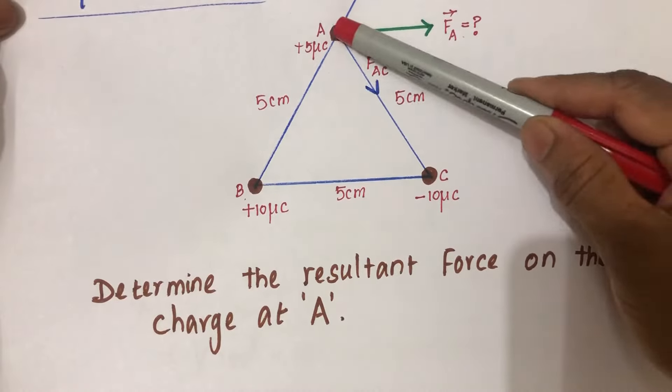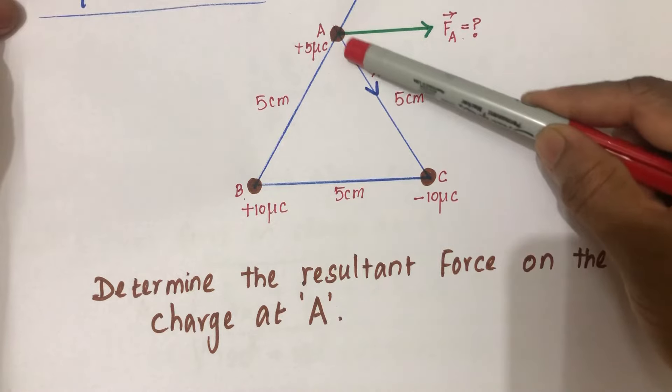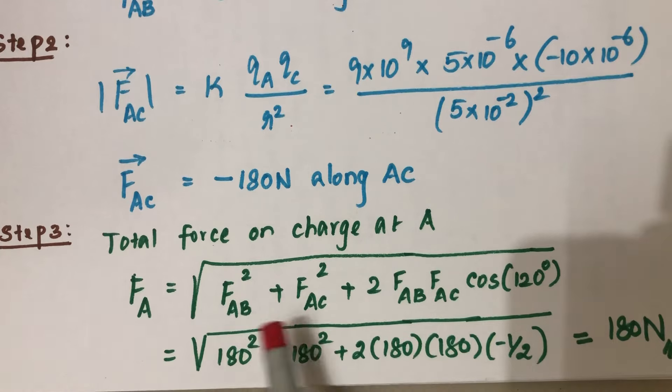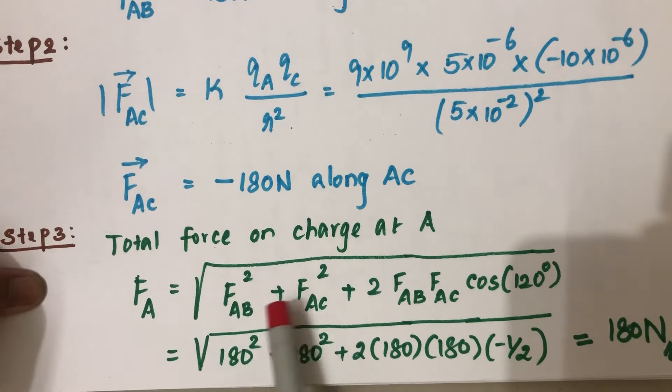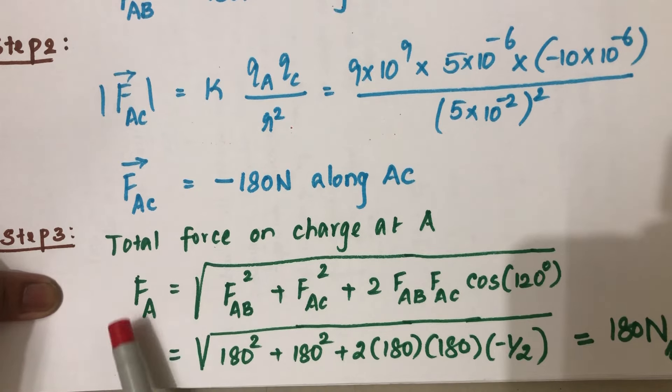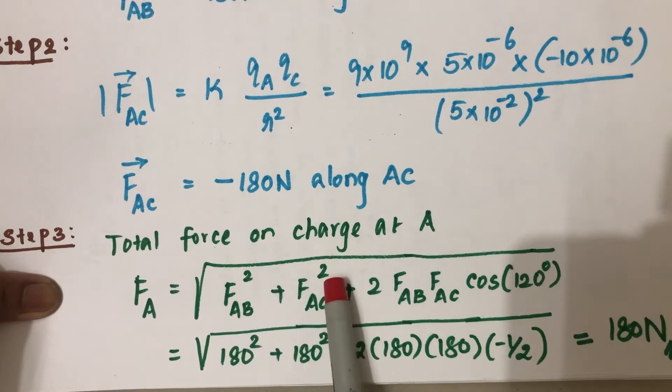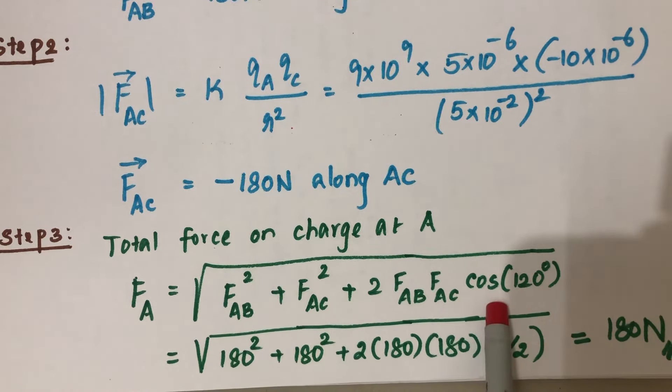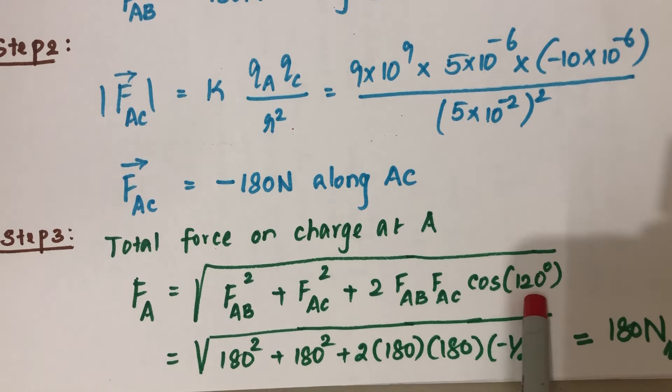To find the total force on the charge at A, if we have two vectors, we can find their resultant using this formula: FA equals the square root of FAB squared plus FAC squared plus 2*FAB*FAC*cos(theta), where theta is the angle between these two forces.